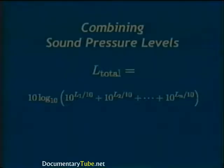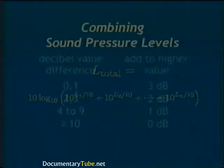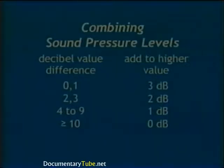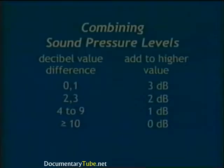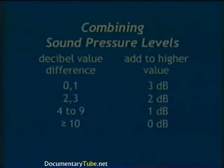For applications requiring only integer decibel accuracy, simple steps can calculate an approximate total sound pressure level. First, find the decibel difference between two sound pressure levels, then add an adjustment factor to the higher level. If the difference is 0 or 1, add 3 dB; if 2 or 3, add 2 dB; if between 4 and 9, add 1 dB. If the difference is 10 dB or greater, you can safely ignore the lower level source — the higher level source is said to mask the lower one.